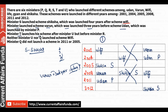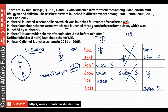The next clue: Minister T launches his scheme after Minister U, but before Minister R. So the order is U, then T, then R. Also, neither Minister U nor Q launched scheme Wi-Fi — so write that U and Q are not associated with Wi-Fi. Furthermore, Q did not launch a scheme in 2011 or 2005.